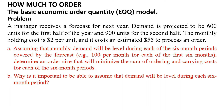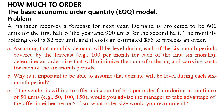Why is it important to be able to assume that demand will be level during each six-month period? If the vendor is willing to offer a discount of $10 per order for ordering in multiples of 50 units — for example 50, 100, or 150 — would you advise the manager to take advantage of the offer in either period? If so, what order size would you recommend?